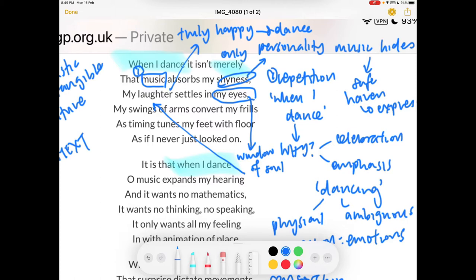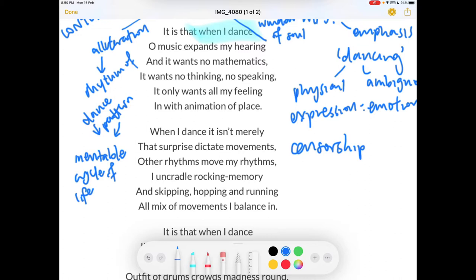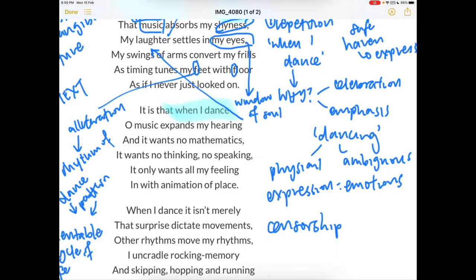My swings of arms convert my frills as timing tunes my feet with floor. I would say here we can see alliteration which mirrors the rhythm of dance. How there's some kind of pattern that one has to follow. And perhaps if we link it back to the human experience, this pattern could be seen in the inevitable cycle of life. And how humans usually have to go through different milestones in our life. And the dance is somewhat like the various milestones that we're going through, which is rhythmic because everybody has to go through it. It's very universal.